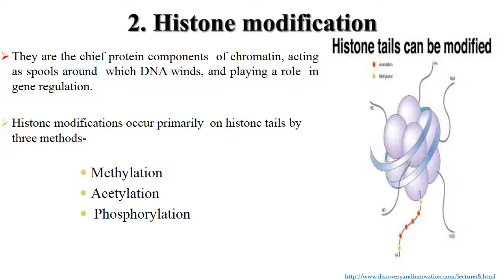Histone modification: Histones are the chief protein component of chromatin, playing a role in gene modulation. Histone modification happens through three processes: methylation, acetylation, and phosphorylation.